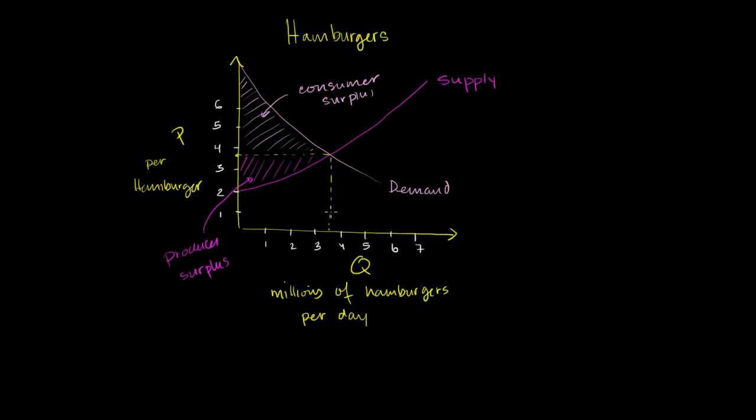The government in this hypothetical says they need more revenue to do other things or pay off debt, so they decide to tax hamburgers. They're going to keep it simple — not a percentage like most sales taxes — but just a flat tax of $1 per hamburger.